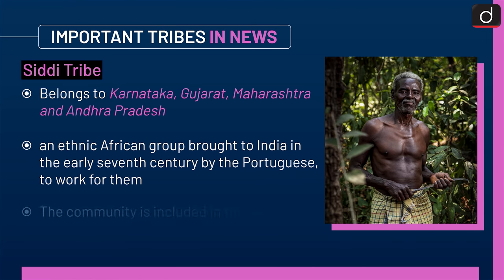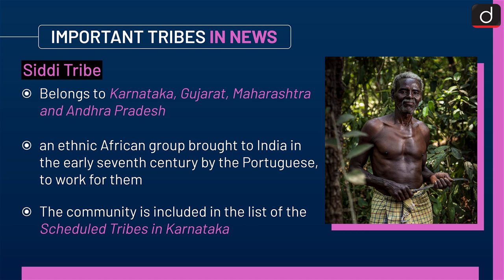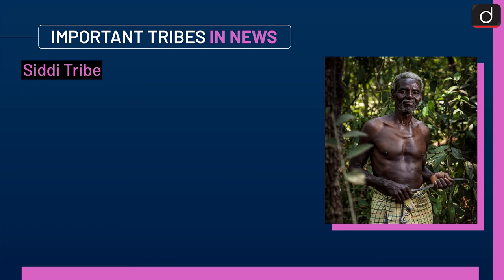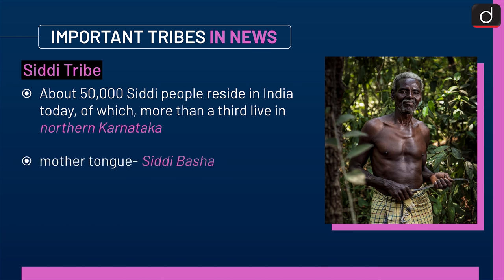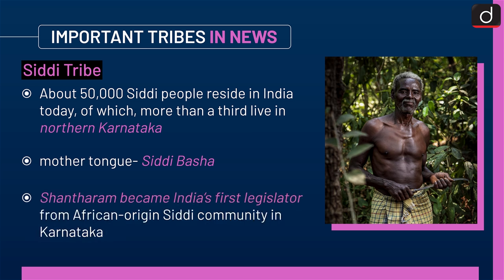This tribe belongs to Karnataka, Gujarat, Maharashtra, and Andhra Pradesh. It is an ethnic African group brought to India in the early 7th century by the Portuguese to work for them. The community is included in the list of Scheduled Tribes in Karnataka. About 50,000 Siddhi people reside in India today, of which more than a third live in northern Karnataka. The mother tongue of this tribe is Siddhi Bhasha. Shantha Ram became India's first legislator from the African-origin Siddhi community in Karnataka.